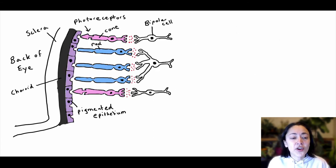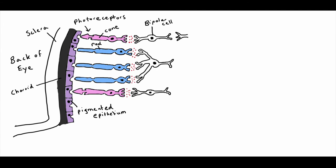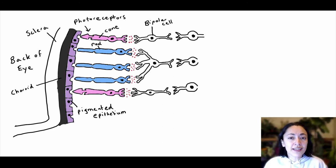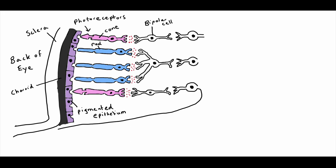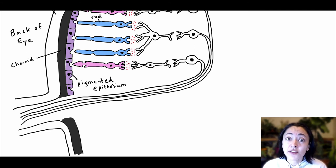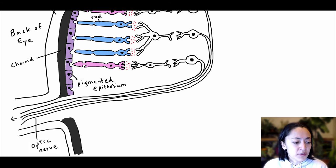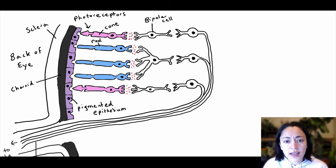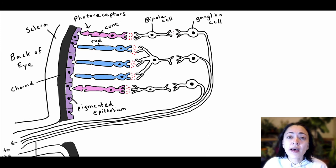Now let's add the ganglion cells to our drawing of the retina. Their axons are really long and exit the back of the eye, forming the optic nerve. Here you can see where all the axons from the ganglion cells merge together to form the optic nerve, and this signal is sent to the brain. The bipolar cells communicate with the ganglion cells by secreting neurotransmitters. The red arrows represent the direction that the nerve signals are traveling.